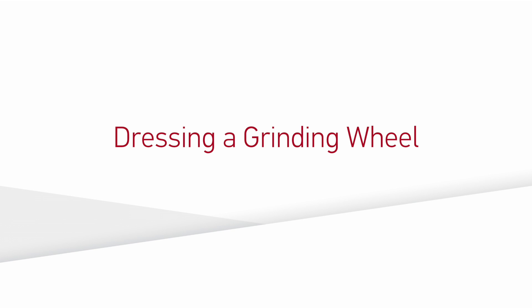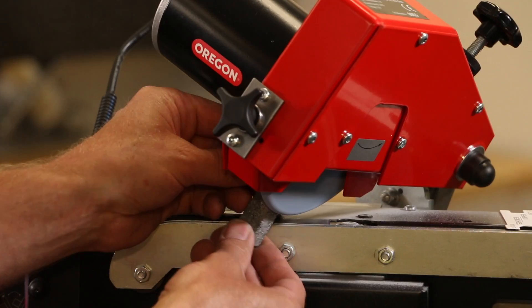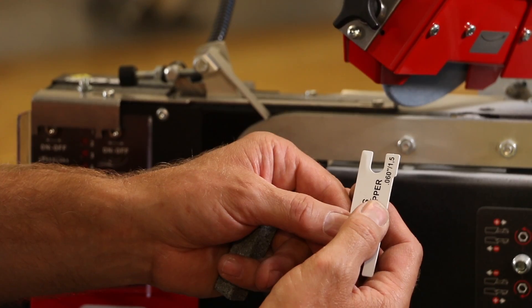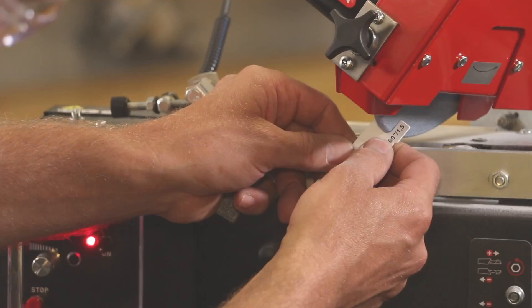Before sharpening chain, the grind wheel must be shaped to the proper profile. Using the dressing brick and a light sweeping action, shape the edges of the wheel. Use the provided template to verify proper radius shape for the specific grinding wheel being used.